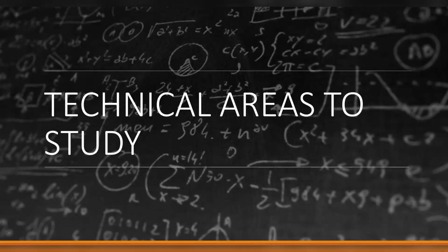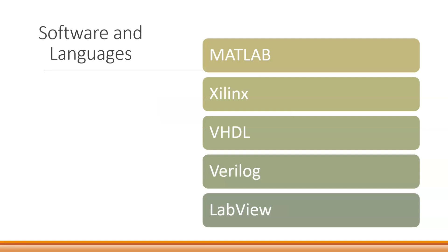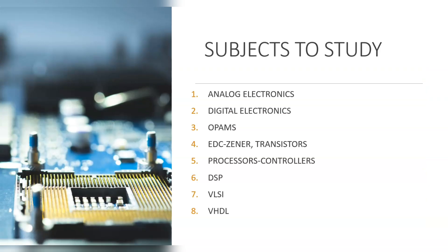Now let's discuss some technical areas to study. Be aware of current trends in electronics: embedded systems, artificial intelligence, ARM, machine learning, real-time operating systems, and software and languages like MATLAB, Simulink, VHDL, Verilog, LabVIEW, embedded C, 8051, assembly programming, Keil, Multisim, circuit simulation, PCB design software, and SPICE circuit simulators.